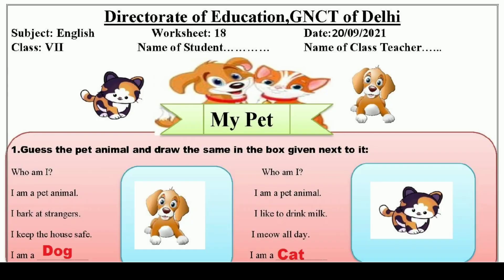Hello and welcome to Lavneesh Sarki class. This is Direct Rate of Education GNCT of Delhi's Worksheet number 18, and it is only for class 7th students. It has been taken from the subject English, and we will learn and understand the topic 'My Pet' in this worksheet.